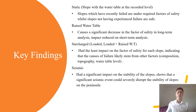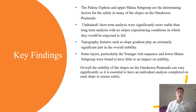The seismic analysis overall had a significant impact on slope stability, showing that a significant seismic event could severely disrupt the slopes on the Amokarau Peninsula. The Pahoya Tephra and Upper Matawa subgroup were found to be the determining factors for safety in many of the slopes. The undrained or short-term analysis was significantly more stable than the long-term analysis, with no slopes experiencing conditions in which they would be expected to fail. Topographic features such as slope gradient were found to play an extremely significant part in overall stability. Some layers — in particular the younger ash sequence at the top of each slope and the lower Matawa subgroup at the base — were found to have little to no impact on stability.